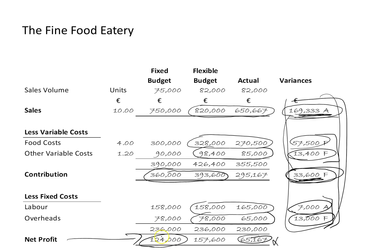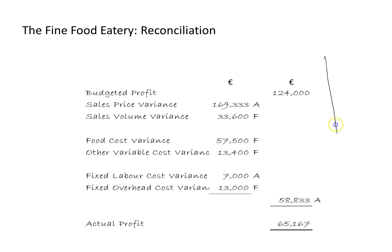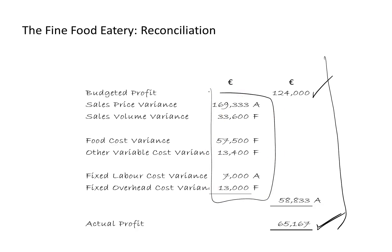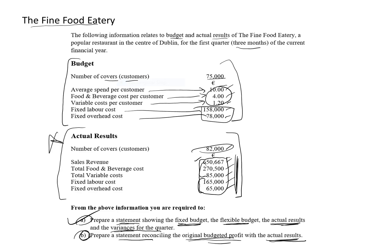Let's just check that. Original budgeted profit €124,000, actual profit €65,167 — and you can see it's right. So I've reconciled the original budgeted profit to the actual results using my variances. Back to the question — you can see what we've done is we've completed part A and part B, and therefore we've completed the whole question.